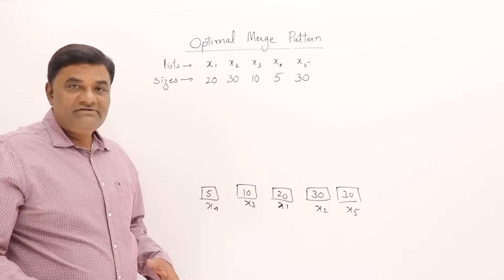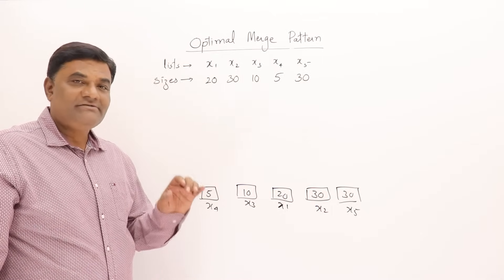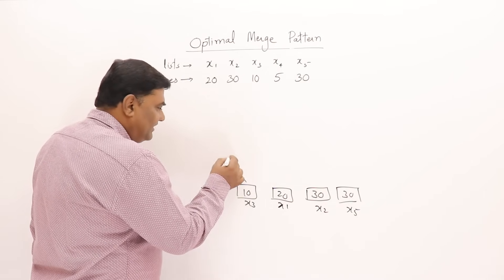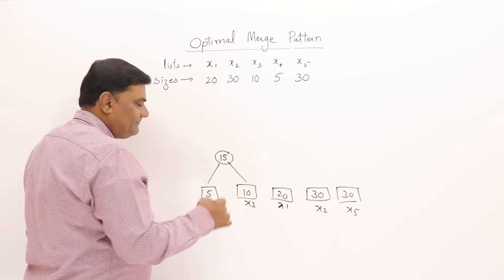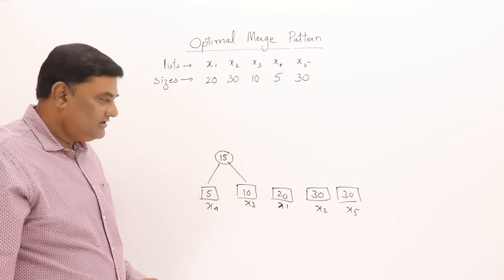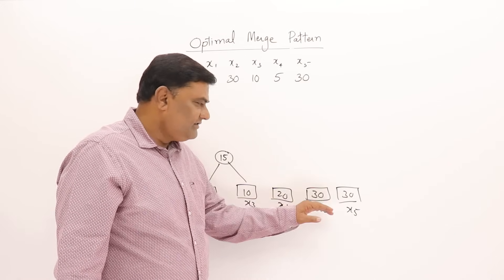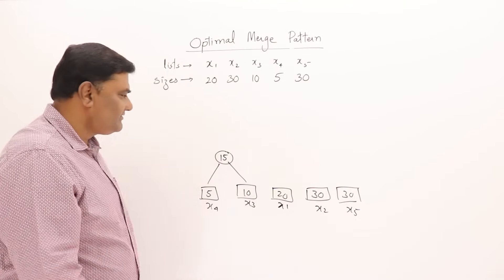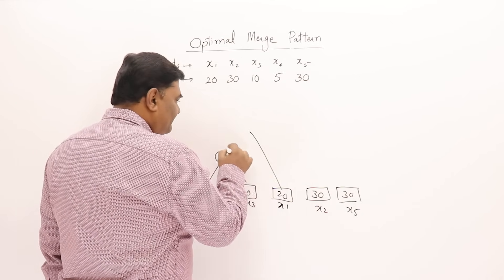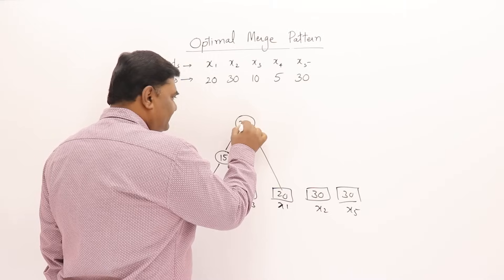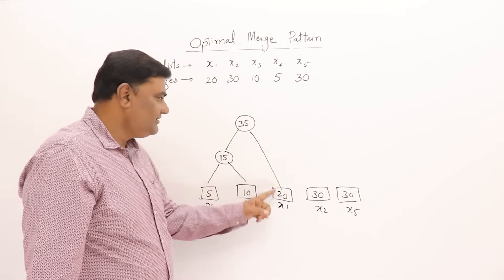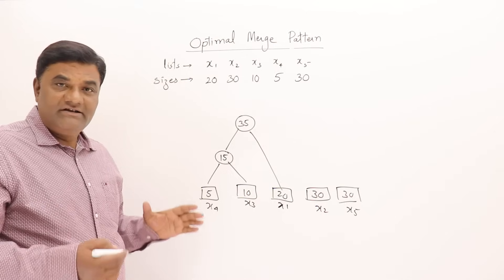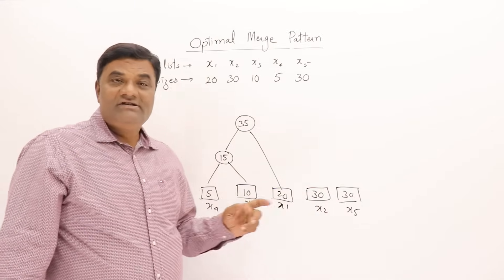Following the optimal merge pattern, we select the smallest pair — sizes 5 and 10 — and merge them to get a new file of size 15. Now the available files are 15, 20, 30, 30. The smallest pair is 15 and 20, so we merge those to get 35.